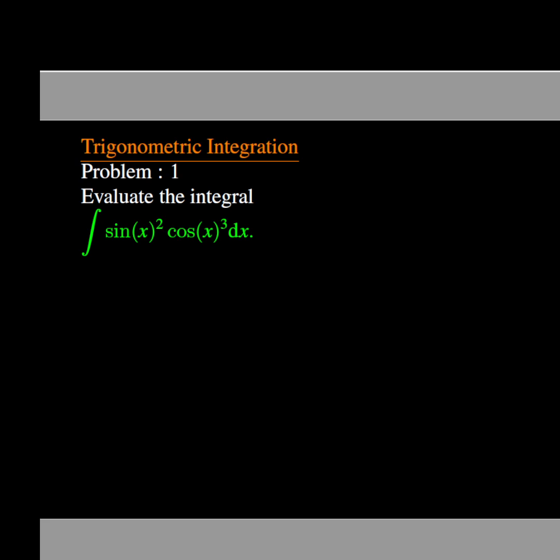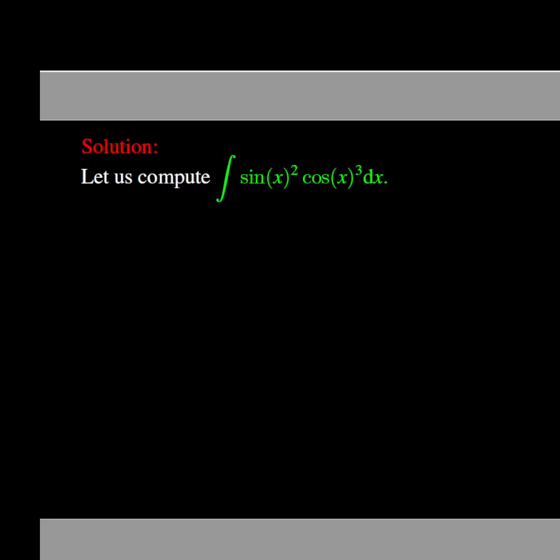In this problem, we are asked to find the antiderivative of the function sine of x to the power 2 times cosine of x to the power 3. Let us compute the integral of sine of x to the power 2 times cosine of x to the power 3. This function is a product of powers of sine and cosine functions.